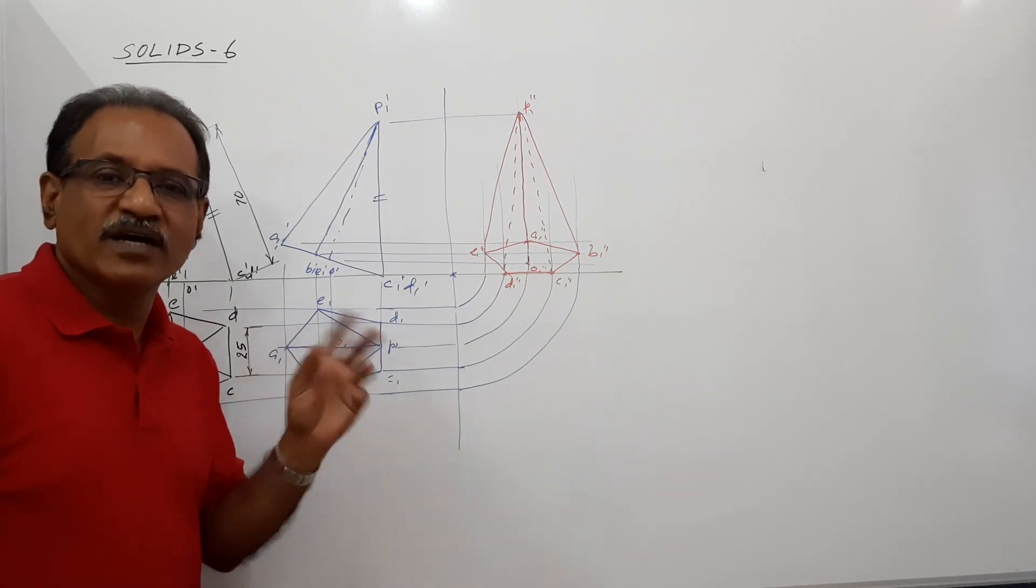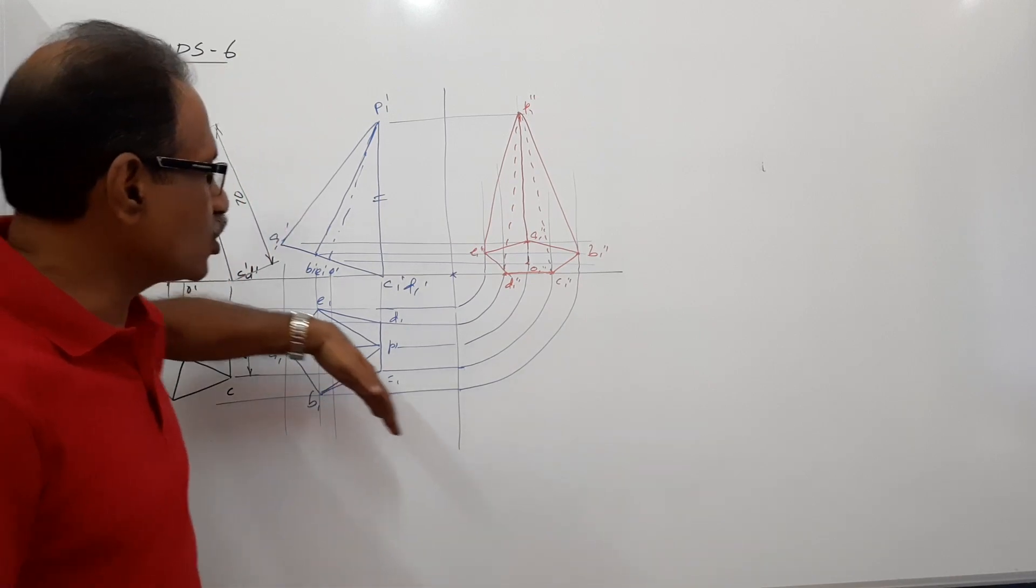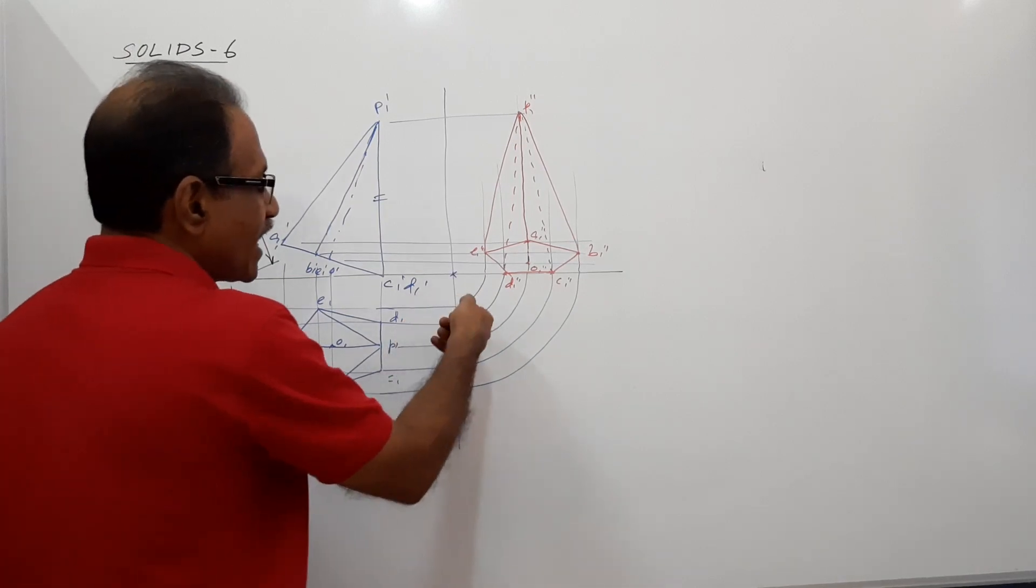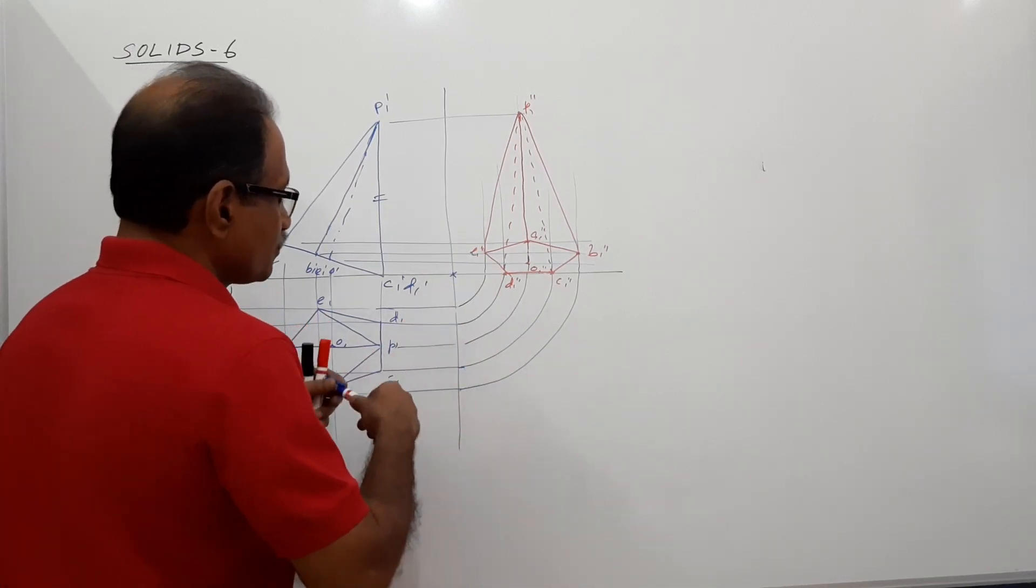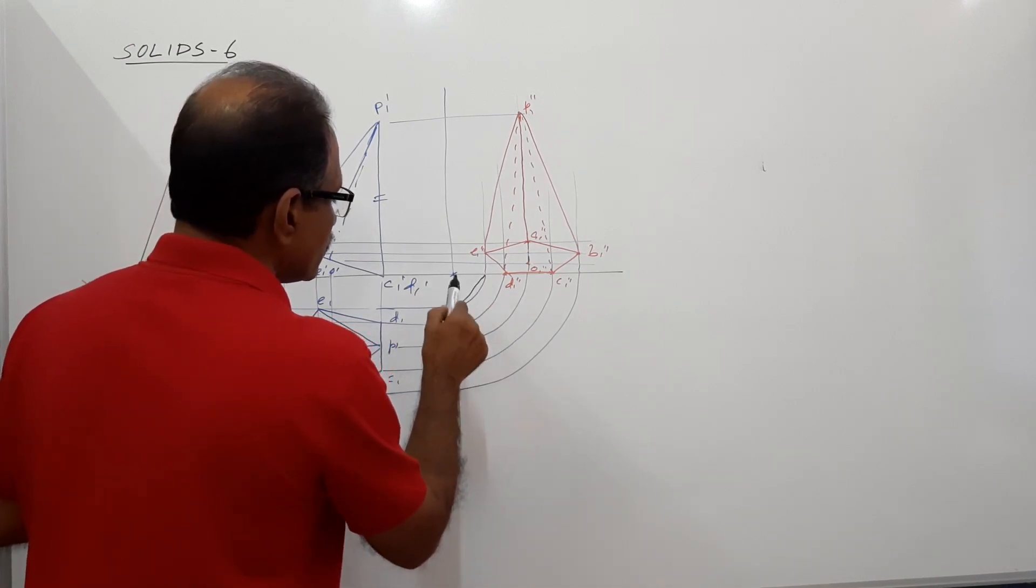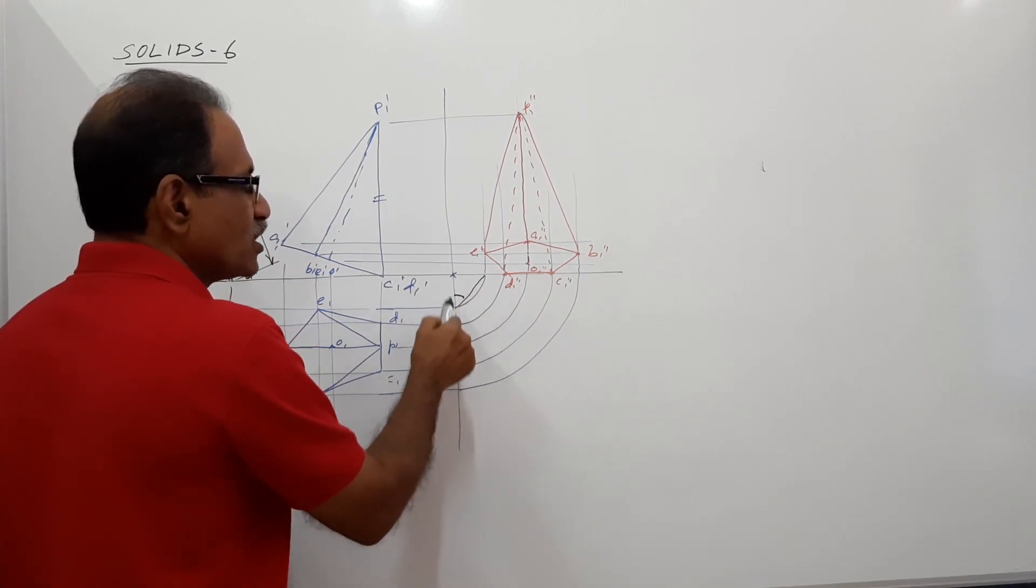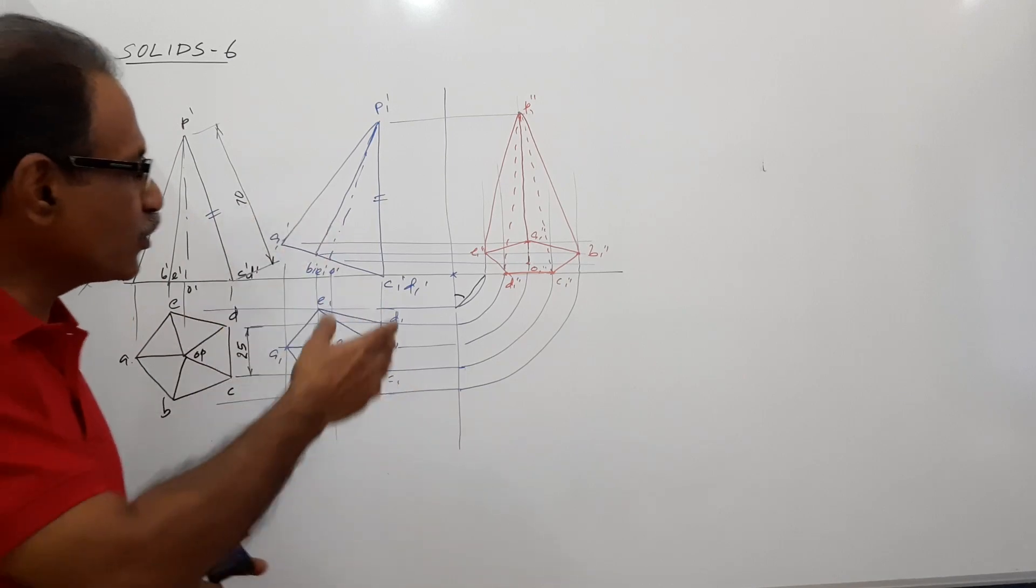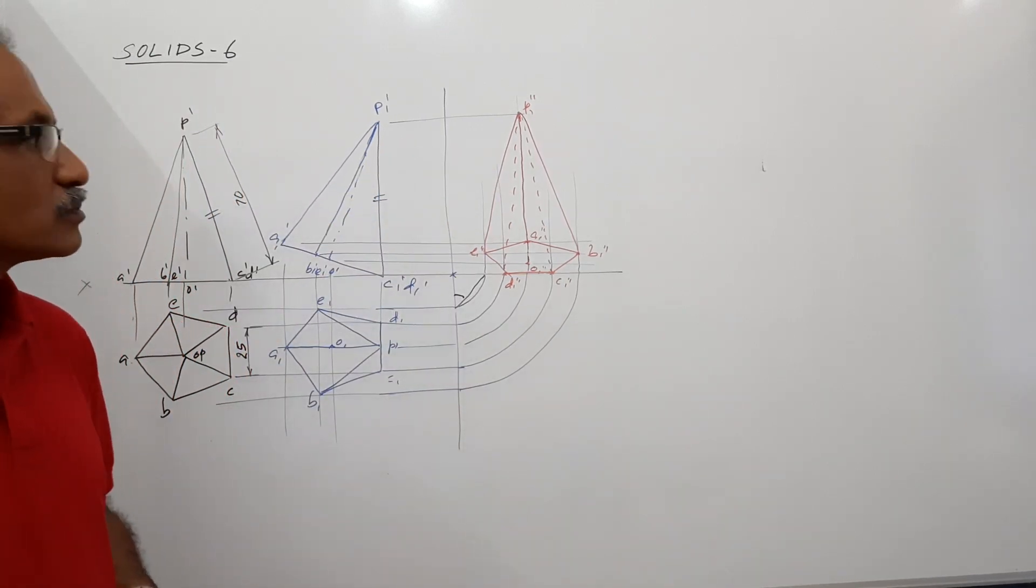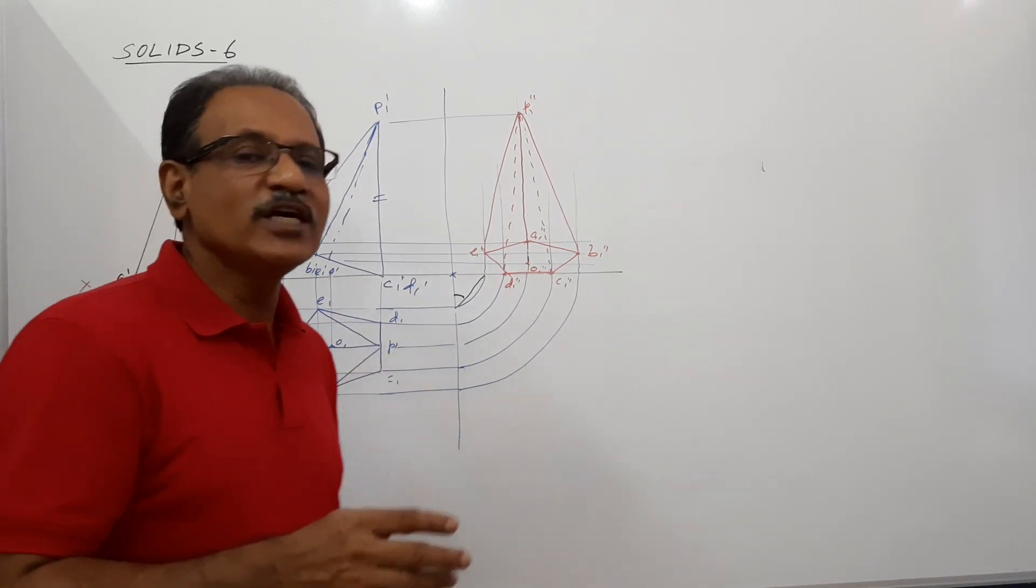This is the first problem where we are drawing an end view. So this procedure of drawing end view can be adopted in any object. Project all these points and draw horizontal lines. Instead of making these arcs, you can make straight lines. If this is 45, this is 45, and this distance will be equal to this distance. So either you draw arcs or you draw 45 lines.